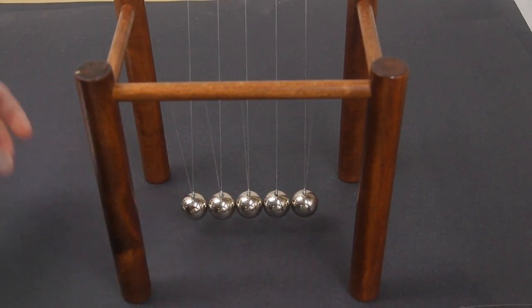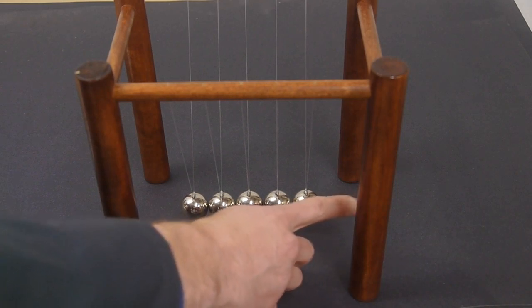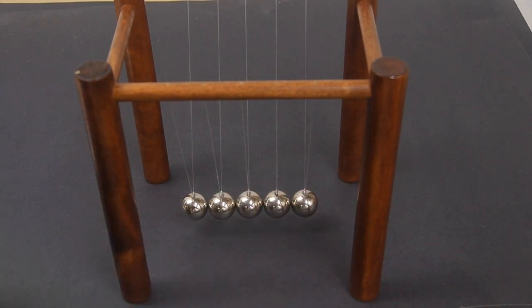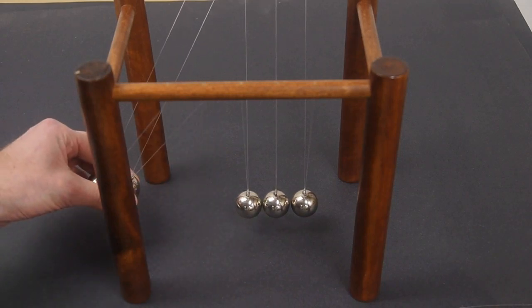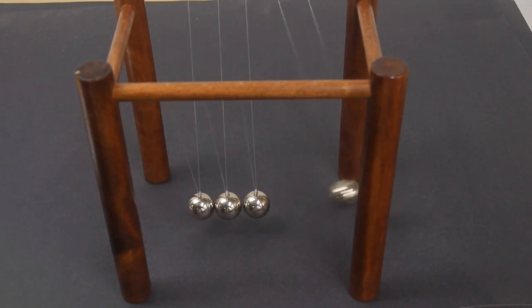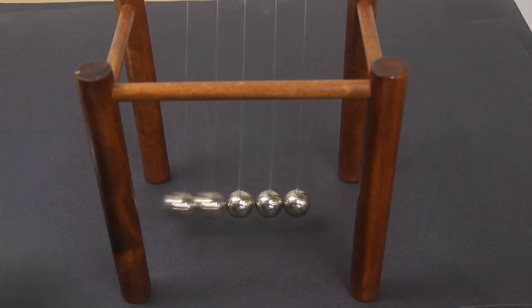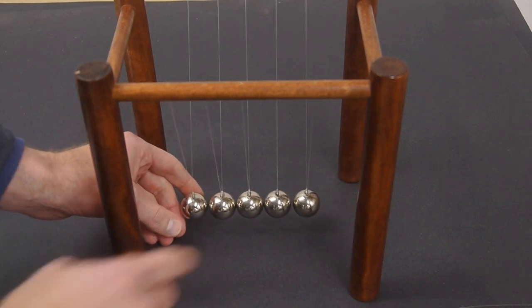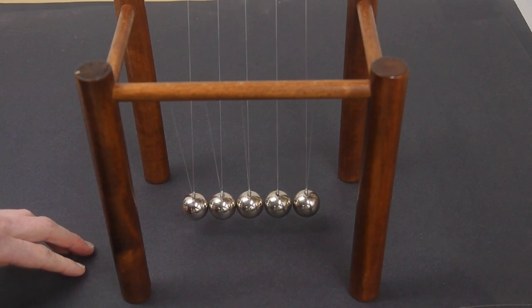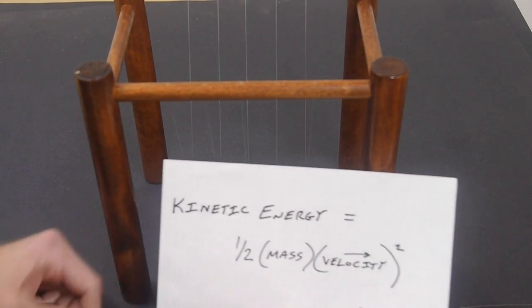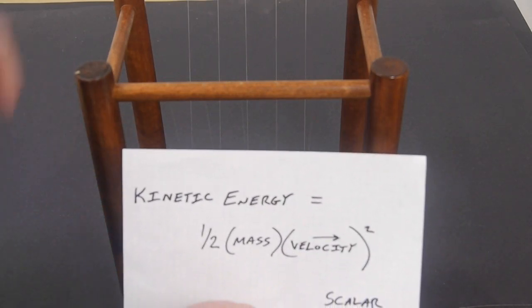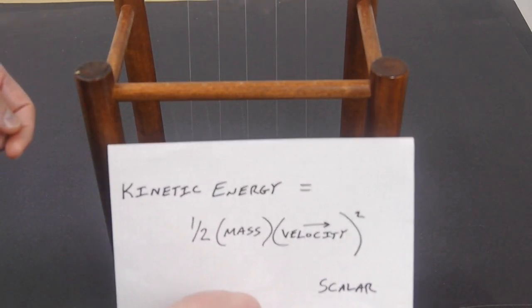So what we should see is two balls lifted up hitting and then the last ball coming off more quickly than it did the first time. So let's try it. We'll pick up two and it doesn't behave the way that I described. We were expecting one ball to come off this side going faster with two balls going in on this side, and what did we miss here? Obviously the experiment doesn't match, so we must have missed something, but the equation is correct.